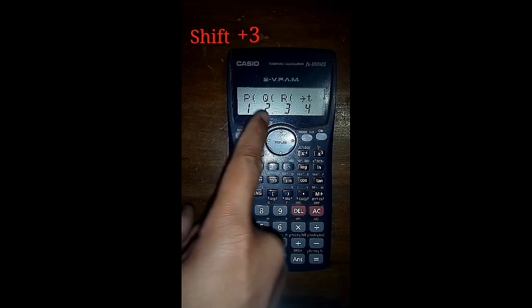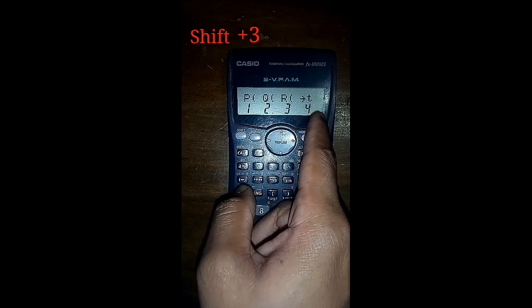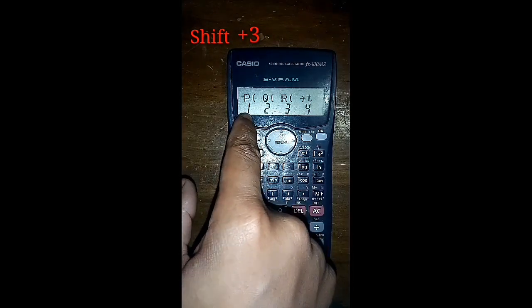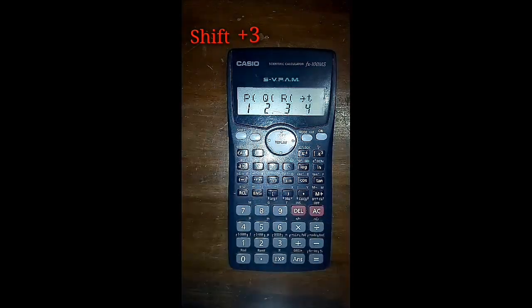So here we can see that 1, 2, 3, 4. As we are dealing with probability value, so we will press 1 for P, probability.